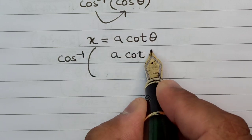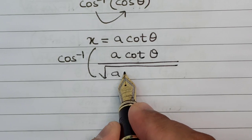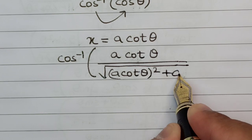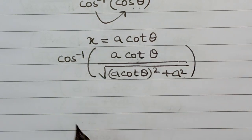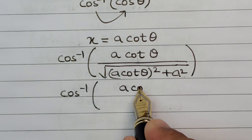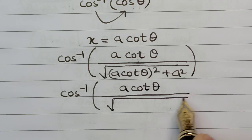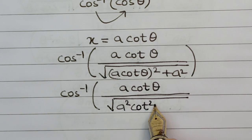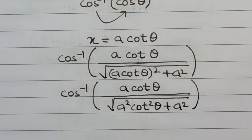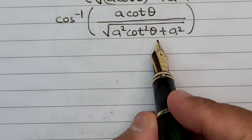So here we'll have a cot θ divided by square root of (a cot θ)² + a². So this particular problem will then be cos⁻¹ of a cot θ divided by √((a cot θ)² + a²). Now if you look closely, we can take out the a² part common from this particular section here.